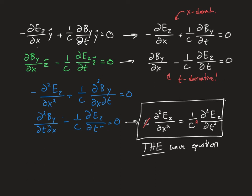Once we have an equation of this form, we know that the function inside satisfies wave behavior — it is a wave. A solution such as Ez = E₀ sin(kx − ωt) is a wave with amplitude E₀ traveling at a speed given by the combination of ω and k. That particular combination ω/k is related to the speed of light.